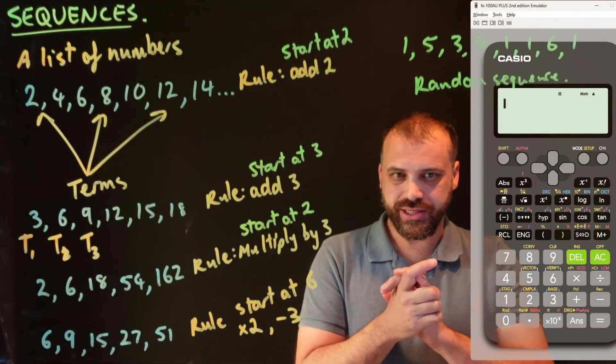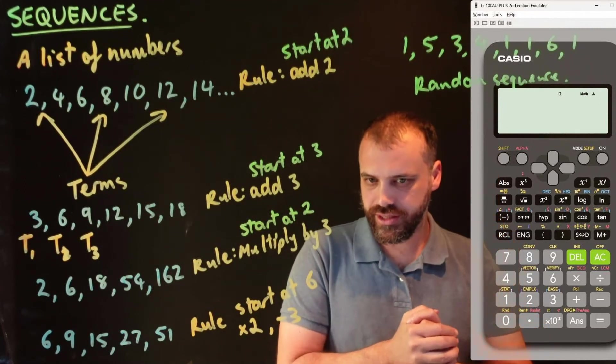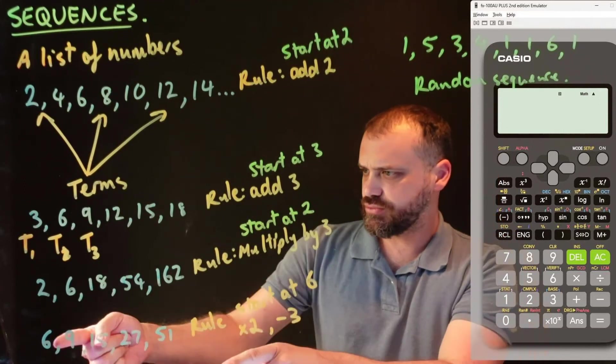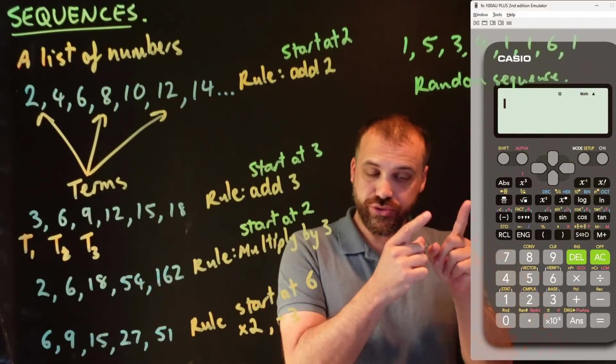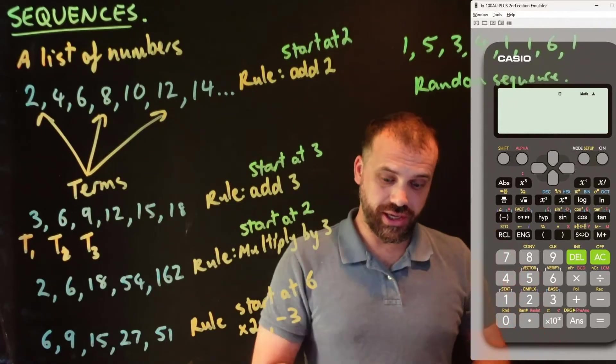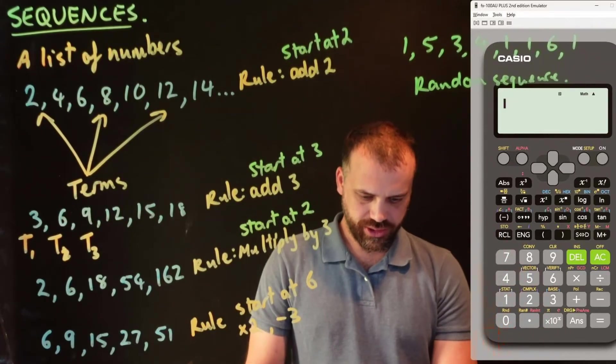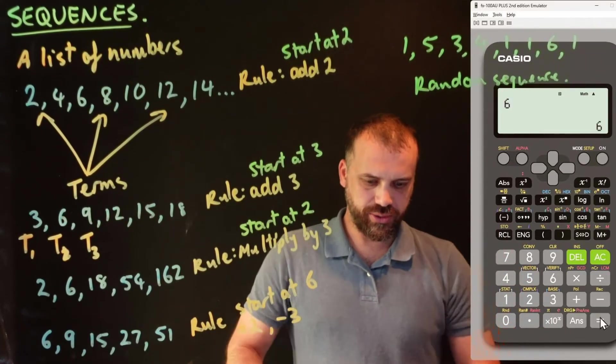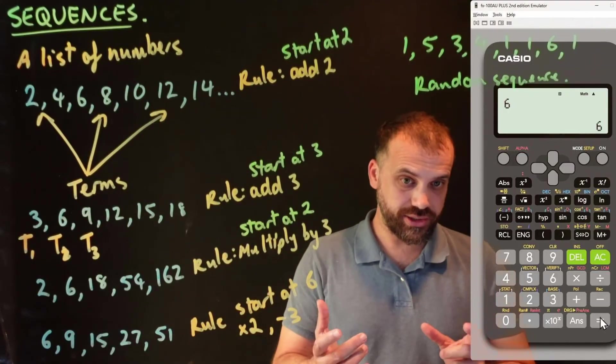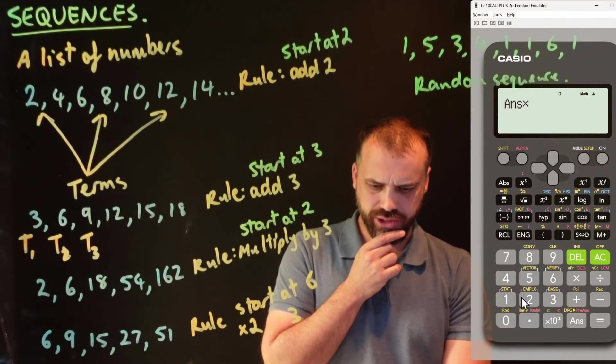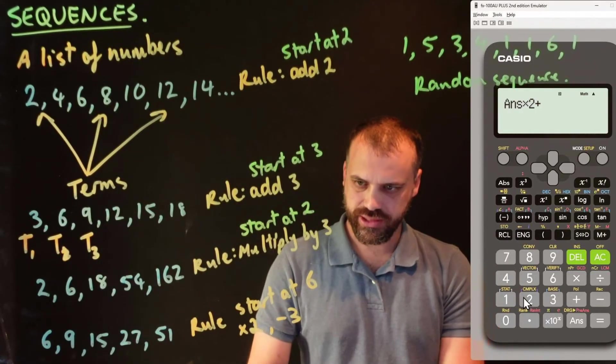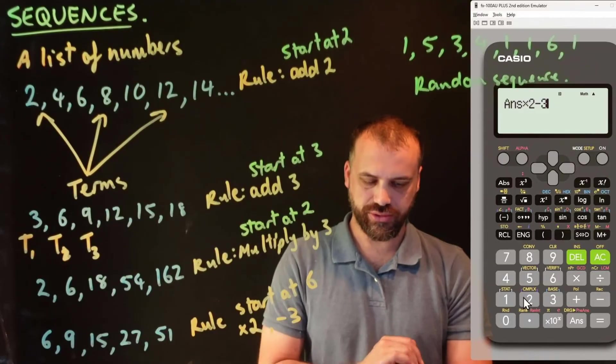So the last thing I want to show you is a fun little thing on our calculator here. So let's look at this rule here. The rule says multiply by 2 and then subtract 3. You can do that super fast on your calculator. So the way to do it is just to type 6 equals. All right, so there's my starting term, 6. And then what's the rule? It's multiply by 2, oh sorry, minus 3.